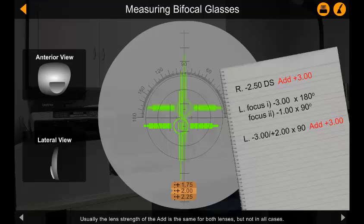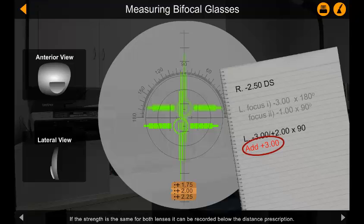Usually the lens strength of the add is the same for both lenses, but not in all cases. Regardless of the type of lens, if the strength of the add is different for each eye lens, it needs to be recorded next to each lens prescription. If the strength is the same for both lenses, it can be recorded below the distance prescription.